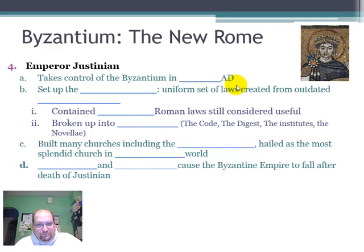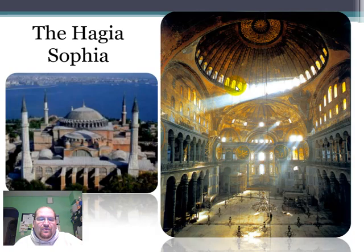However, plagues and attacks caused the Byzantine Empire to fall after the death of Justinian. Here's a picture of the Hagia Sophia — it is a massive church. Just look at the inside: there are no center supports holding up this massive dome. It's very, very beautiful on the inside, just as it is on the outside.